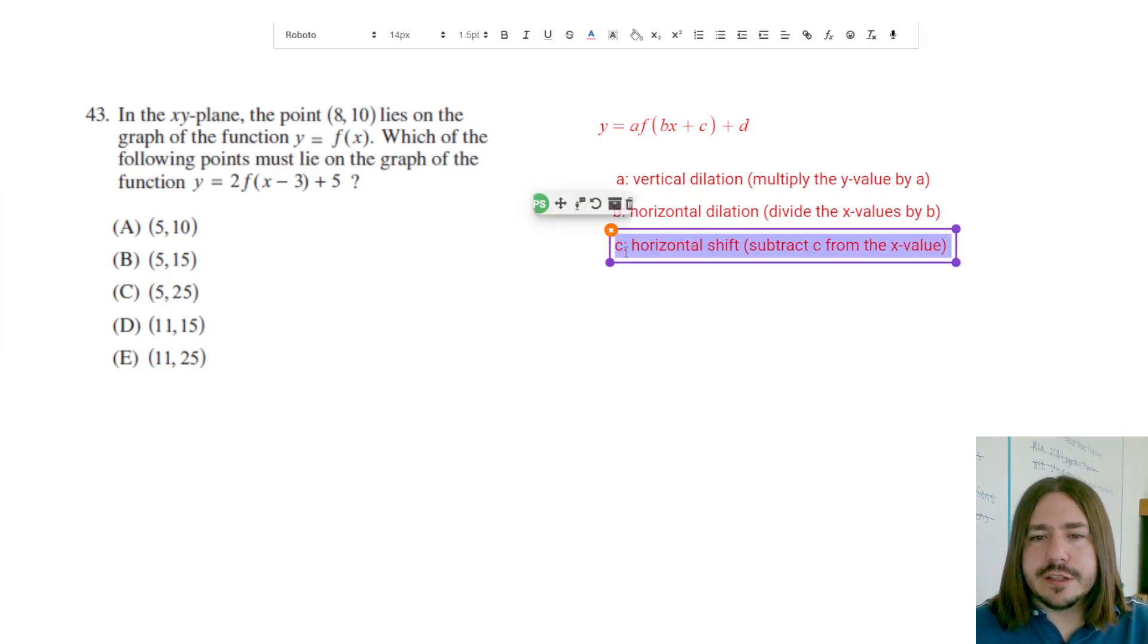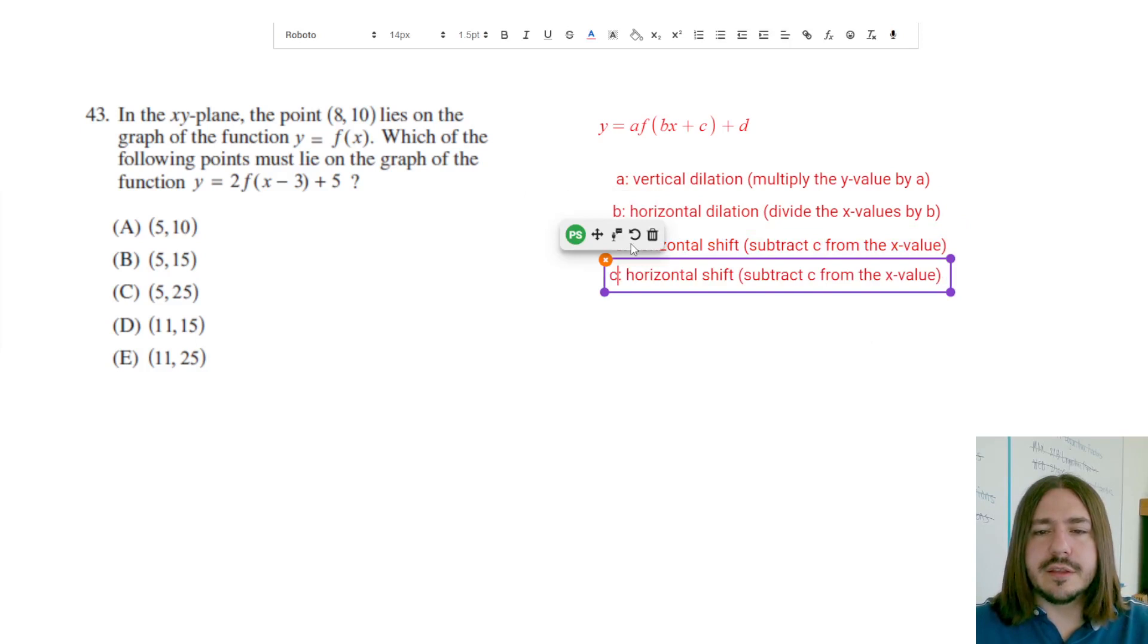And then finally, D is going to cause a vertical shift. And that is going to do exactly what it says it's going to do. If it says plus D, you're going to move it up. So we're going to add to the Y values. So here's basically our rules of what each one of these does.